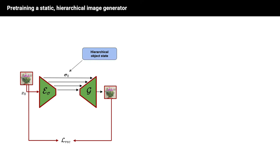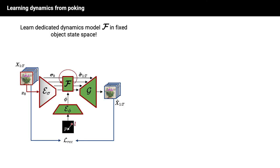To obtain a fixed object state space, we pre-train a UNET autoencoder to reconstruct static image frames, resulting in a state corresponding to a hierarchy of representations, one for each individual spatial level.